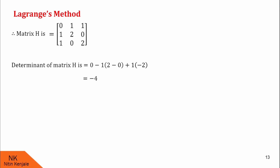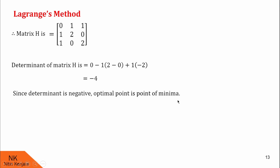Since the determinant of the Hessian matrix is negative, the optimal point is a point of minima. Therefore, the value of z = 1/2 that we obtained is the minimum value of z. I hope you understood this example completely. Now we will see one more example on this.